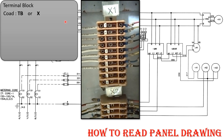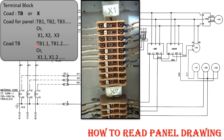A terminal block is basically indicated by either TB or X. There are various numbers of TBs, and a group of TBs is given a nomenclature such as TB1, TB2, TB3, or X1, X2, X3, and so on. Inside this group, individual TBs are also given numbers. For example, to identify a particular TB, the code would be TB1.1, TB1.2, TB1.3, or as indicated here, X1.1.